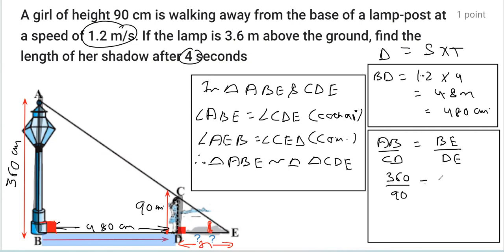...and BE, from B to E, will be 480 plus X, or X plus 480. And DE is X.